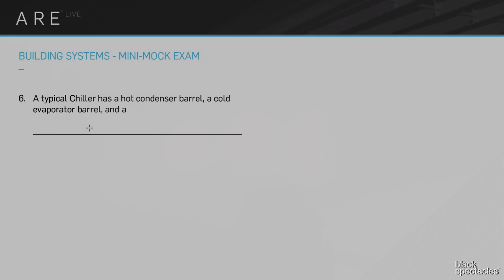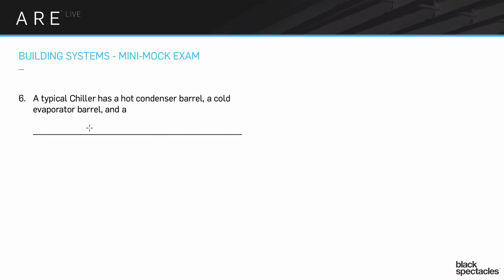Okay, so we're back to the chillers again, just thinking about these as basic systems and how you think about them. A typical chiller has a hot condenser barrel, a cold evaporator barrel, and something else - what's the other thing?